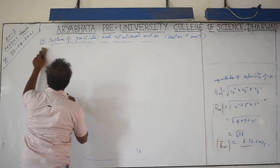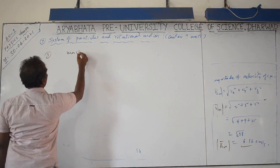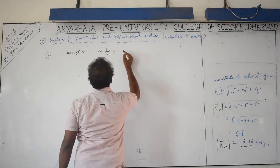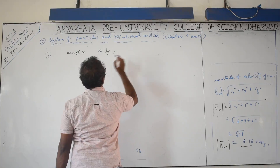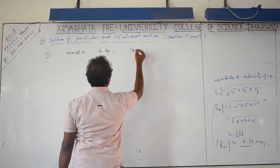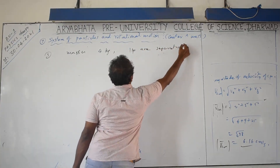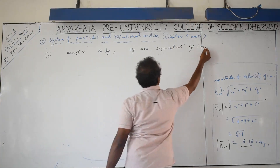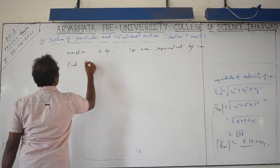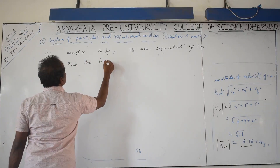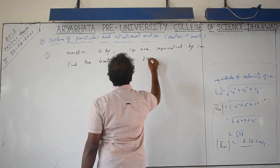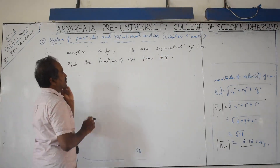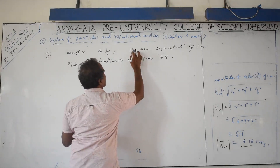Problem number 3: Masses of 4 kg and 1 kg are separated by 1 meter. Find the location of center of mass from the 4 kg mass. Since coordinates are not given, it is your choice where to place them. Center of mass does not depend on the coordinate system — it only depends on the masses and their distribution.